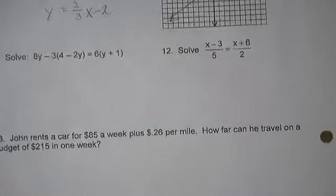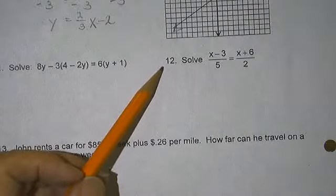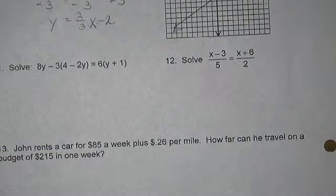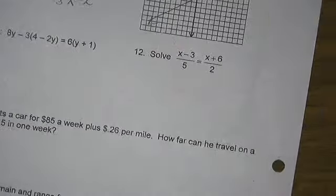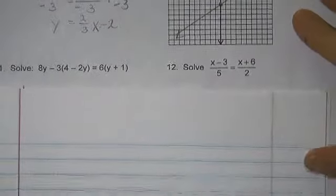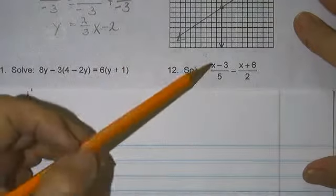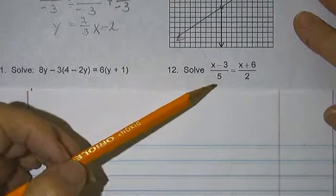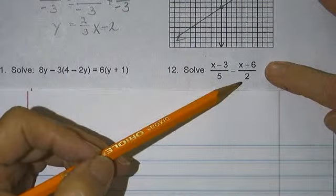Geometry homework problems 12, 13, and 14. Here we go. Solve x minus 3 over 5 equals x plus 6 over 2.